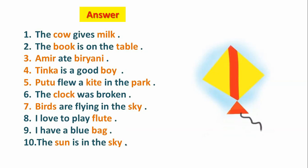So here are the answers. Number one: The cow gives milk — cow and milk are nouns. Cow is the name of an animal and milk is the name of a product. Number two: The book is on the table — book is the name of a thing and table is the name of a thing, so they are called nouns.